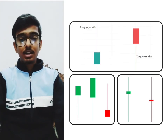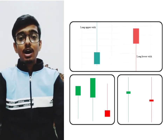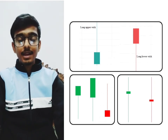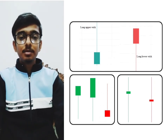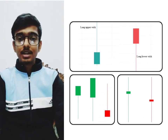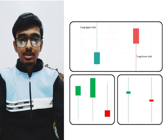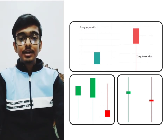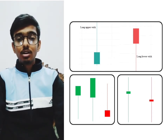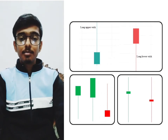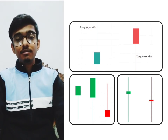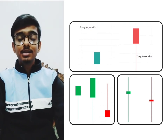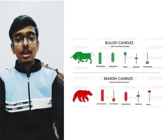Now, the nature of the wick. If the upper wick of the candle is longer compared to the body, then the wick represents bearish behavior. If the lower wick of the candle is longer compared to the body, then the wick represents bullish nature.